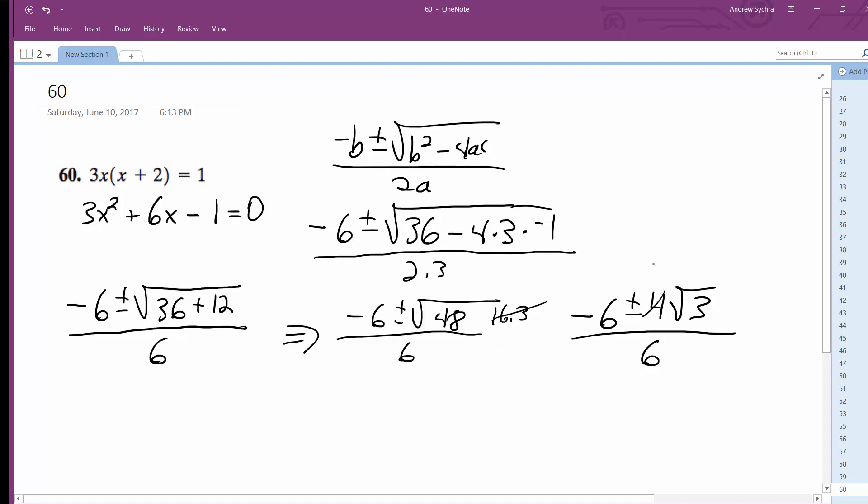This can be reduced down - 6 becomes 3, and 4 becomes 2, because we're dividing by 2. So it becomes -3 ± 2√3 all over 3. That's it.